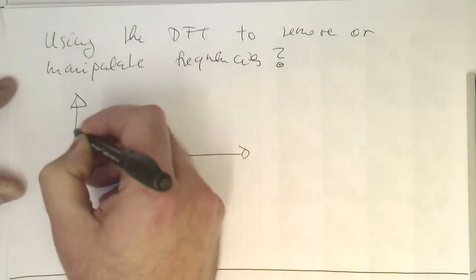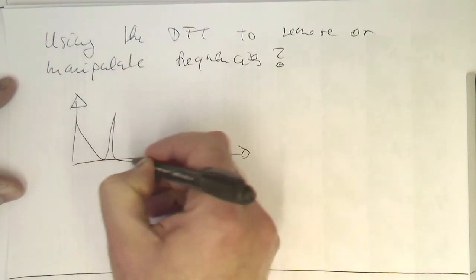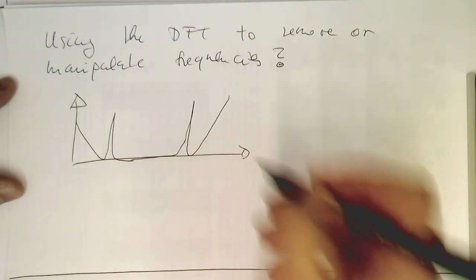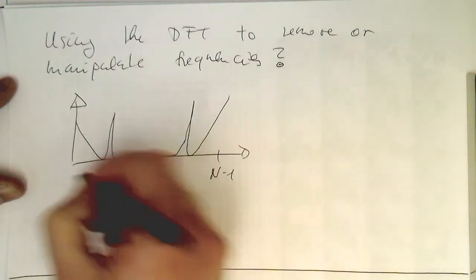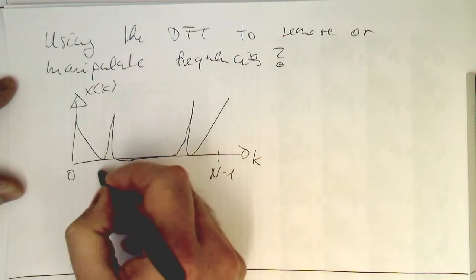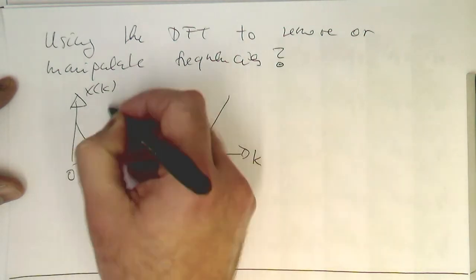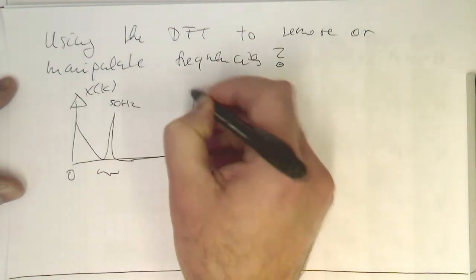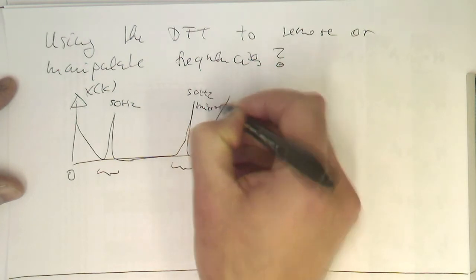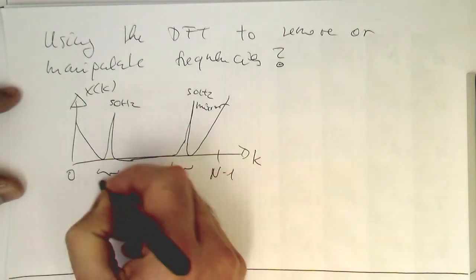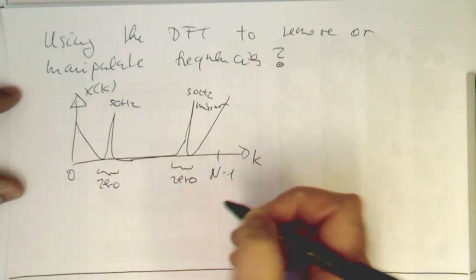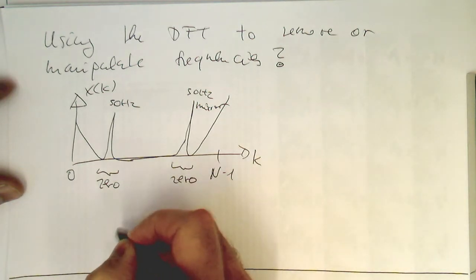If you look at our spectrum again here, so our spectrum looked roughly like this and then it went up again. We had another peak here and then this was here n minus 1 and 0, so that's x of k and this is k. So imagine we would like to get rid of these 50 Hertz peaks here. So that's a 50 Hertz peak and that's a 50 Hertz mirror. So if you want to do this, we could just essentially zero this area here and then we're doing an inverse Fourier transform.